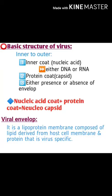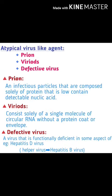Basic structure of a virus from inner to outer: the innermost layer is the nucleic acid — either DNA or RNA. The protein coat is the capsid. The outer coat is either the presence or absence of an envelope. Together the nucleic acid and protein coat form the nucleocapsid. The viral envelope is a lipoprotein membrane composed of lipids derived from the host cell membrane and proteins that are virus-specific.